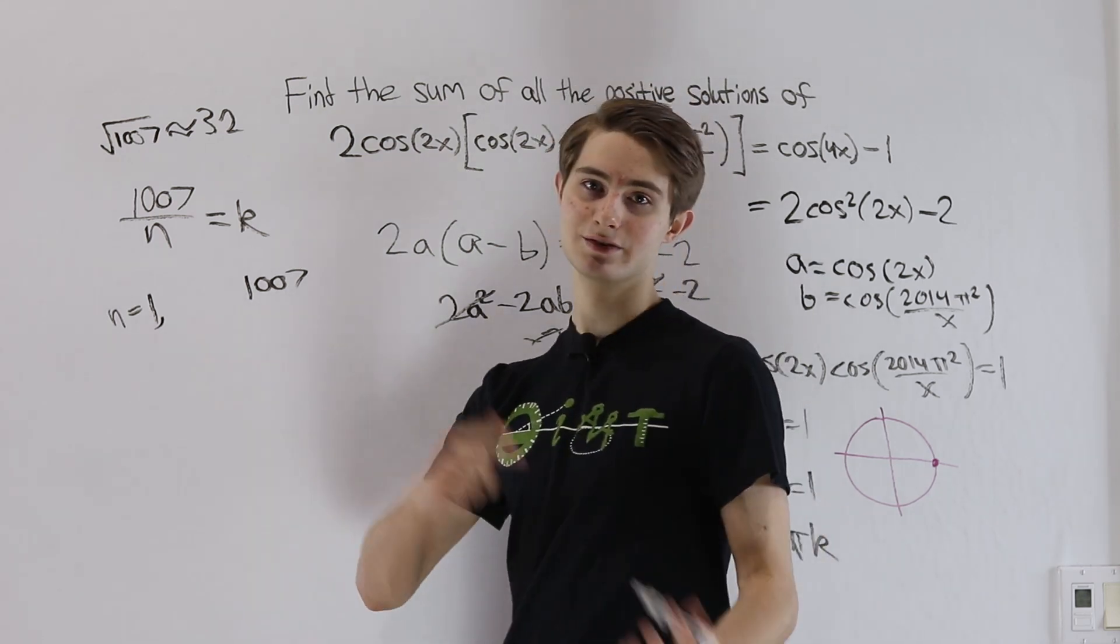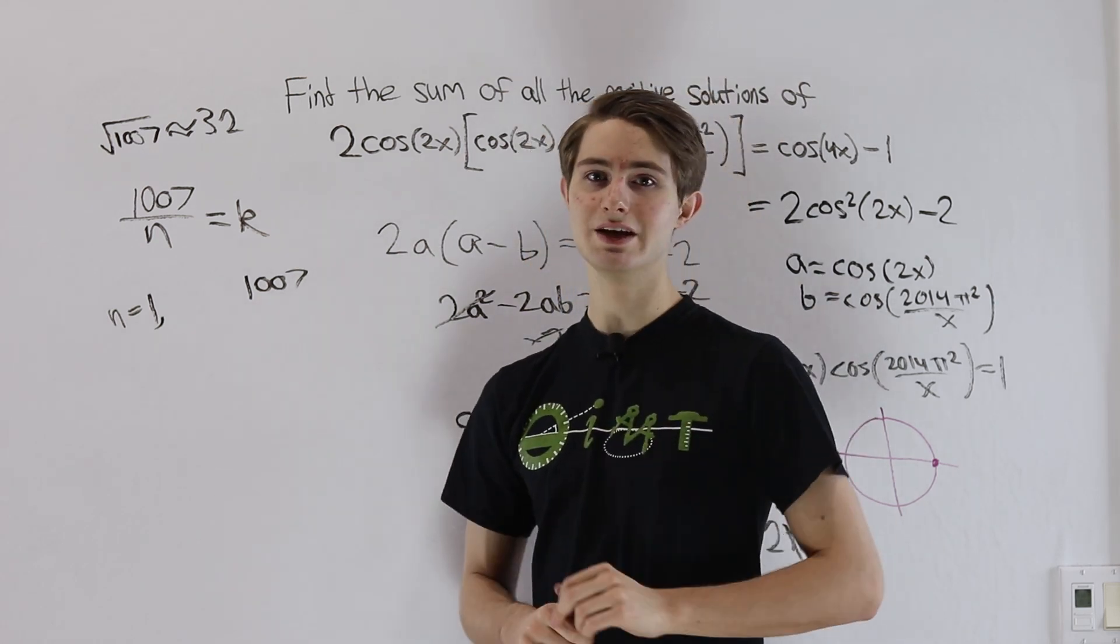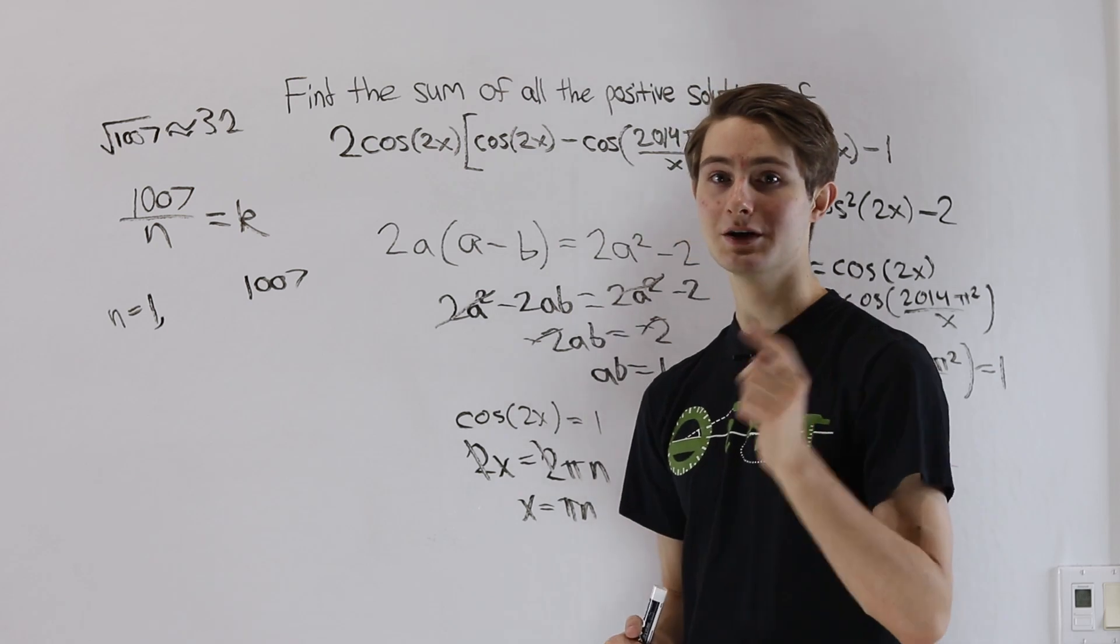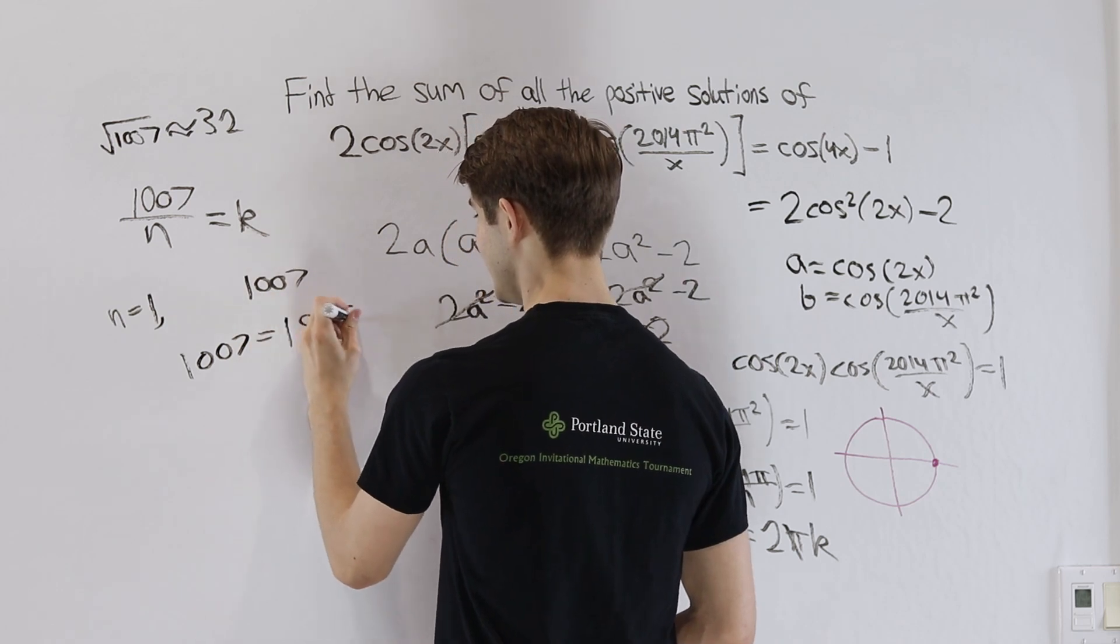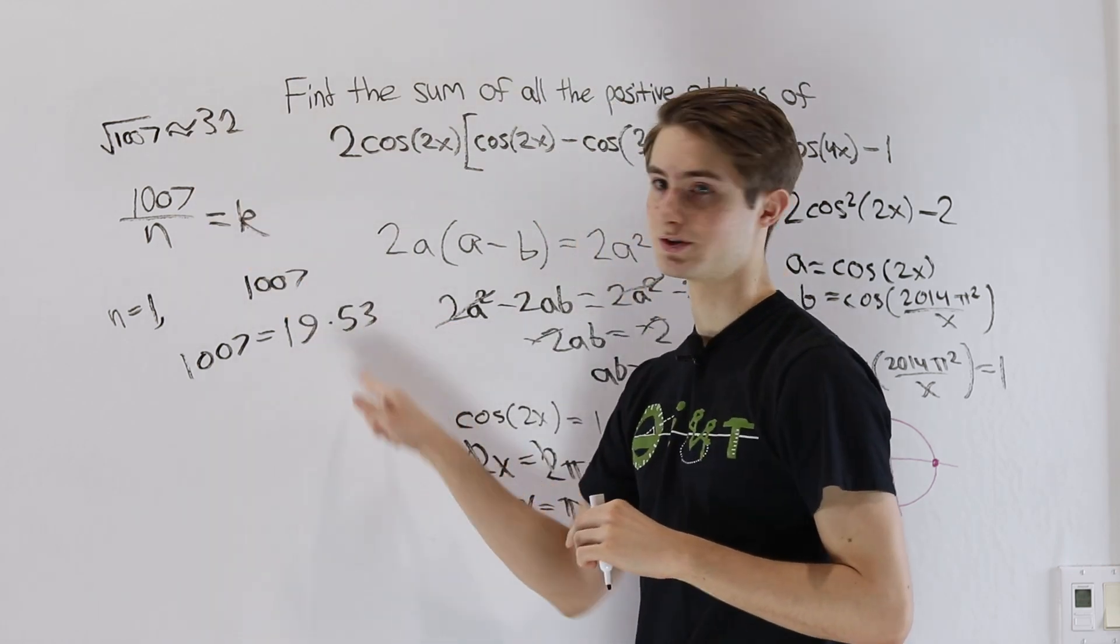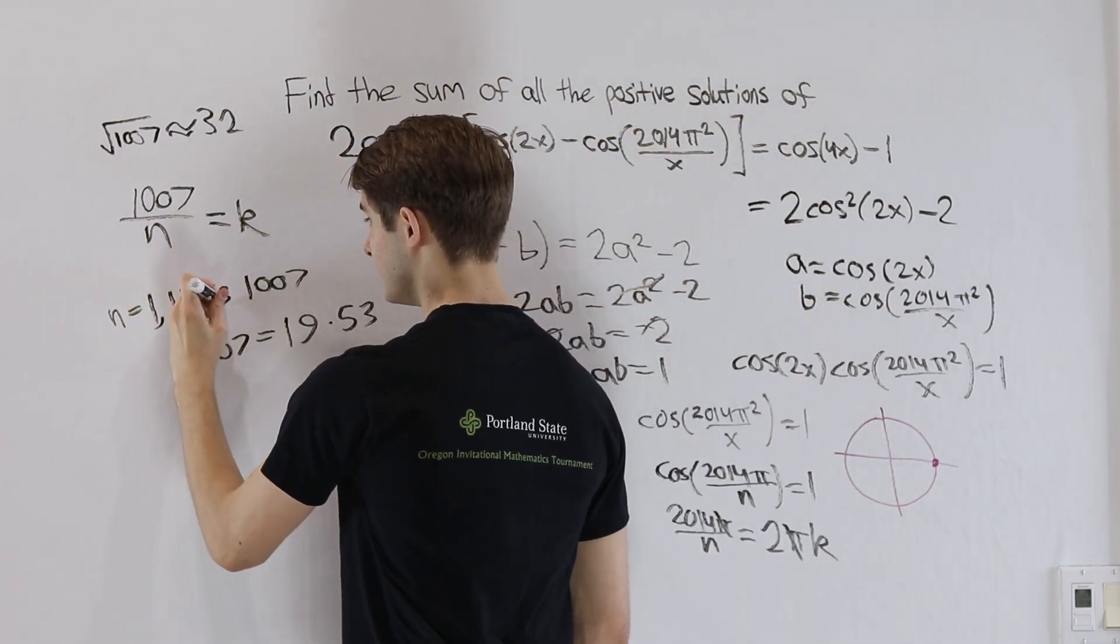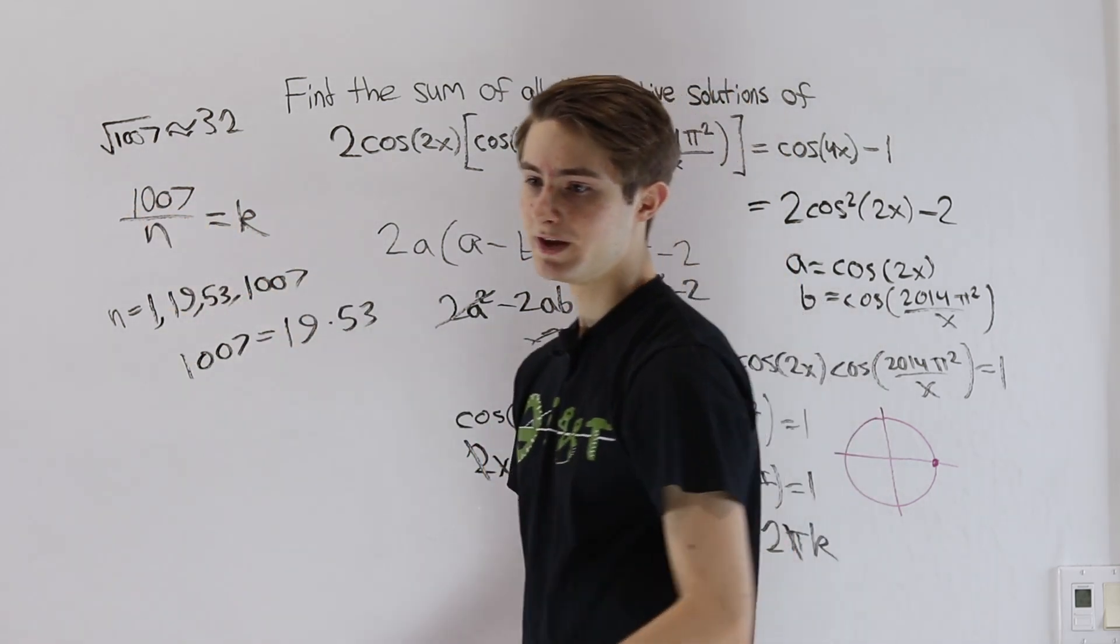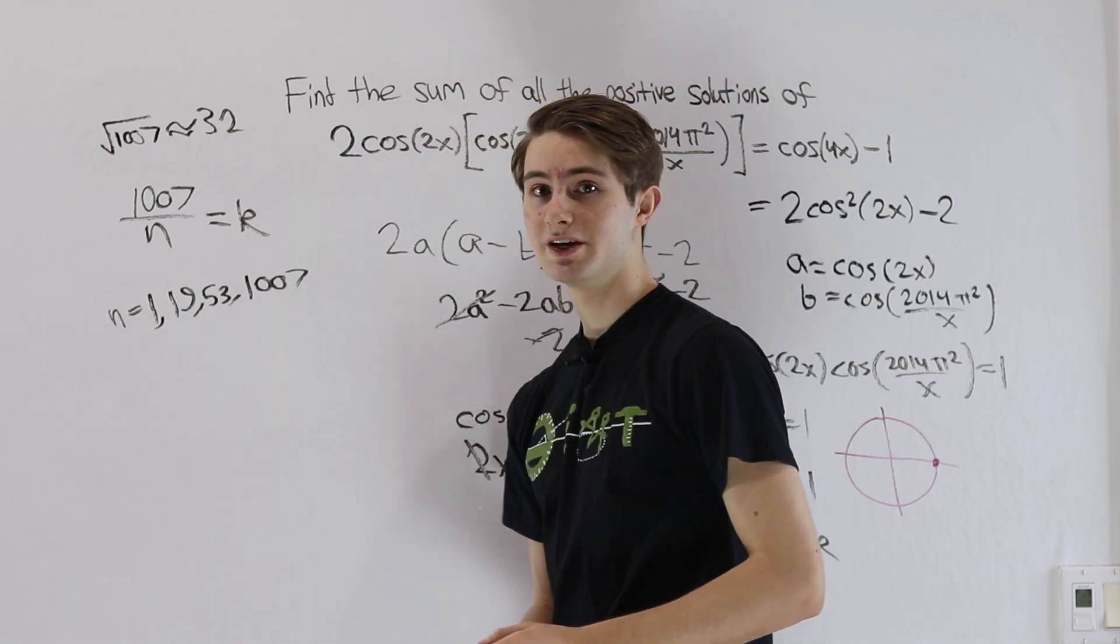Now we know 1007 is odd, so 2 definitely isn't a prime factor, 5 definitely isn't either, but beyond those easier cases we're just going to have to try dividing 1007 divided by 13, divided by 17. If we keep doing that, what we'll find is the other two values are 19 and 53. So if we do 1007 divided by 19, which is less than 32, we'll get 53 as our result, and that is the other prime factor. 53 is prime. So we know that if we divide 1007 by 19, we'll get 53, which is a whole number, and similarly if we divide by 53, we're going to get 19. Since 19 times 53 is 1007, these are all of the solutions for the case where both of the cosines are equal to positive 1.